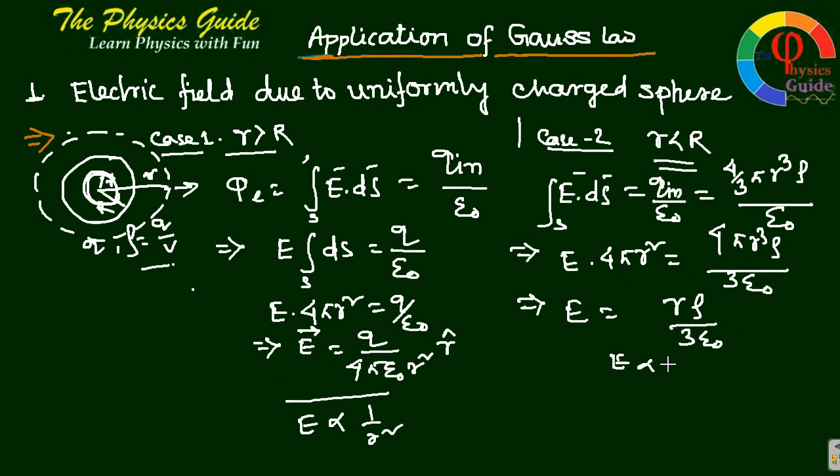There should be a third case, case 3: on the surface, meaning r equals capital R. Just replace r with capital R in case 1. That is E equals Q by 4πε₀R². This is your third case.